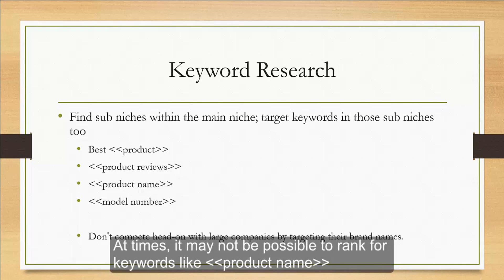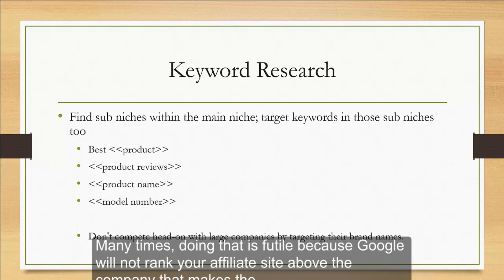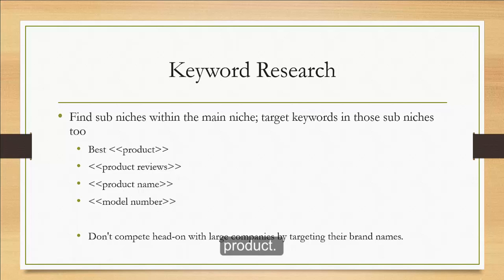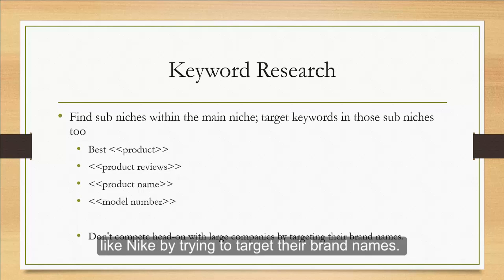At times, it may not be possible to rank for keywords like product name, because you might be competing head on with the company making those products. Many times, doing that is futile, because Google will not rank your affiliate site above the company that makes the product. Like if you have a site about shoes, you would not want to compete directly with companies like Nike by trying to target their brand names.